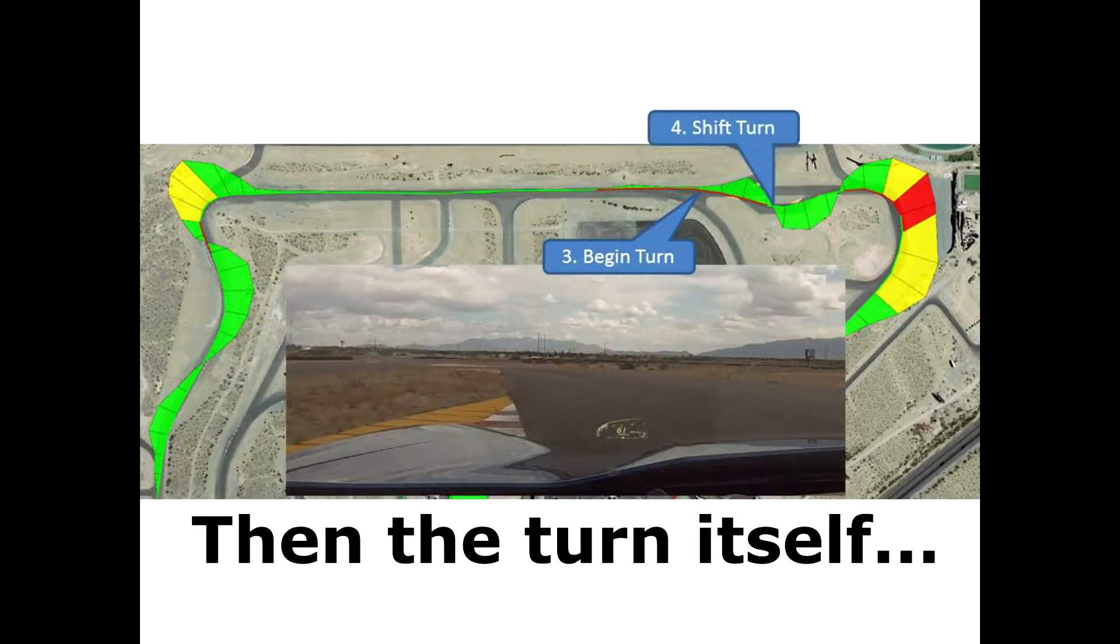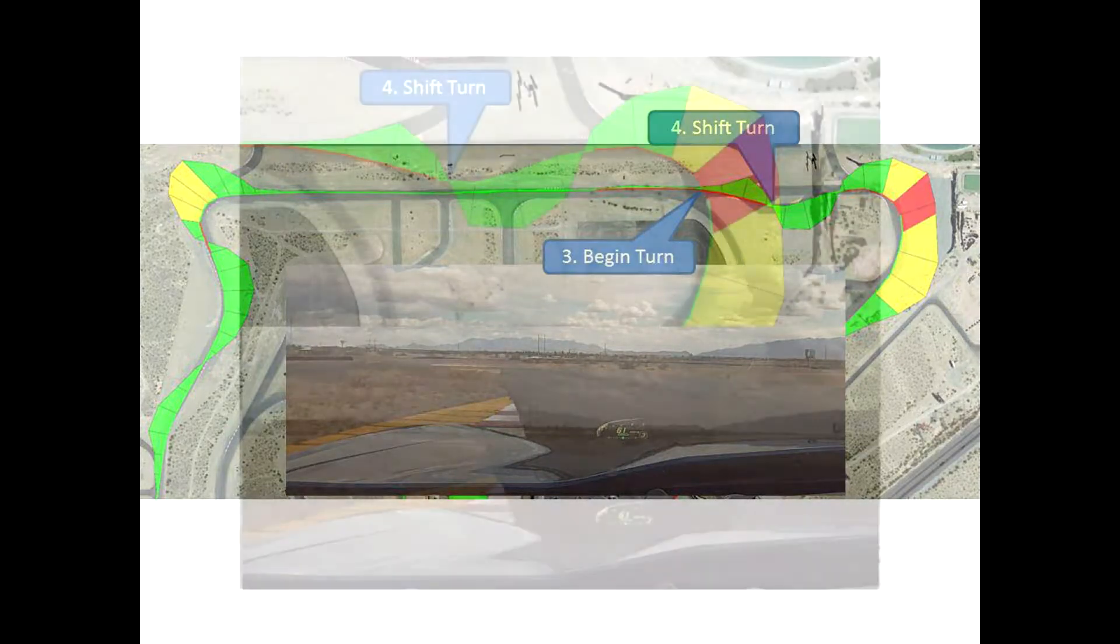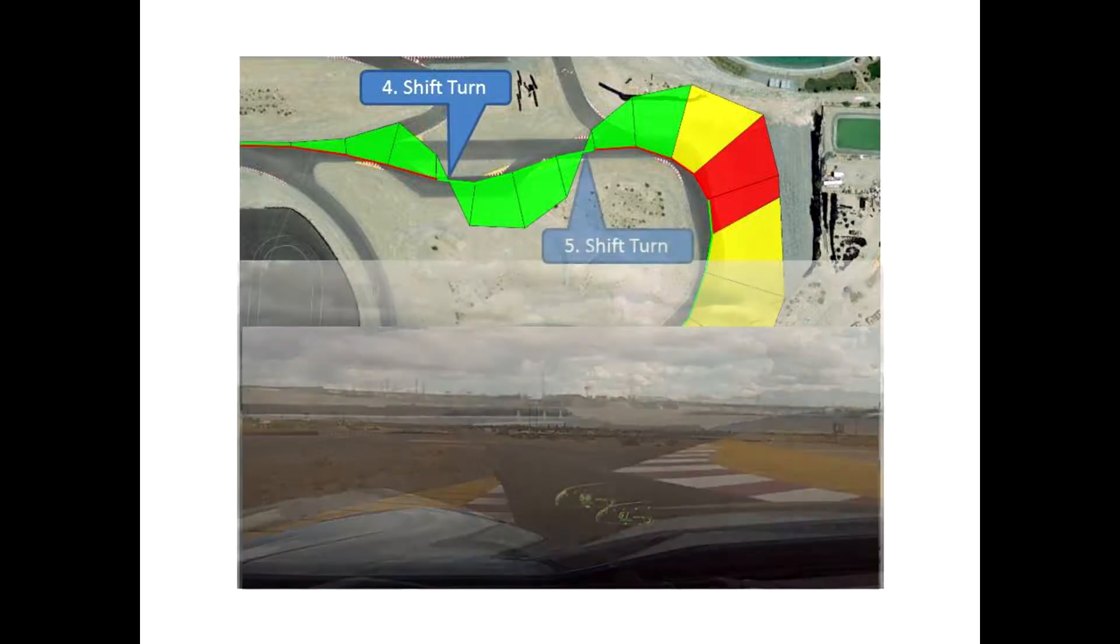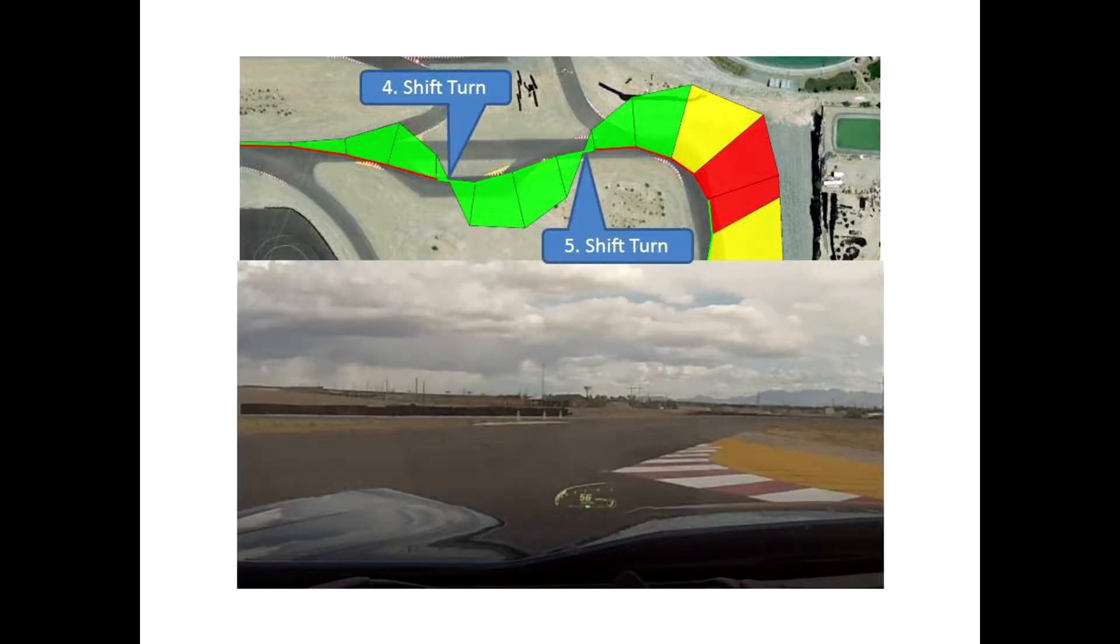The turn itself starts off with a shift turn at the apogee of the bus stop. And then another shift turn is going to take place on the exit, which is actually the point that determines the apogee for turn 16.